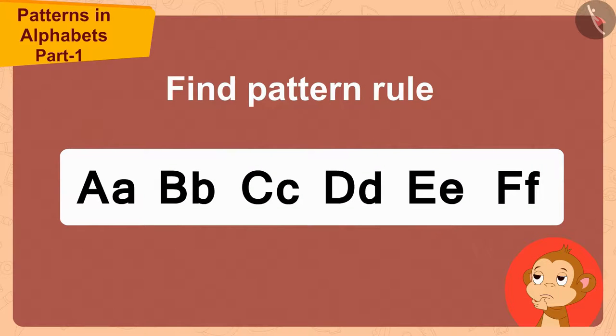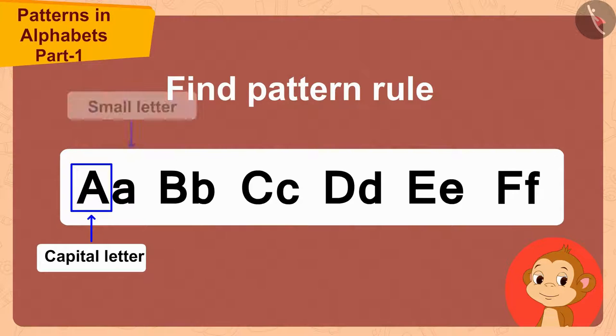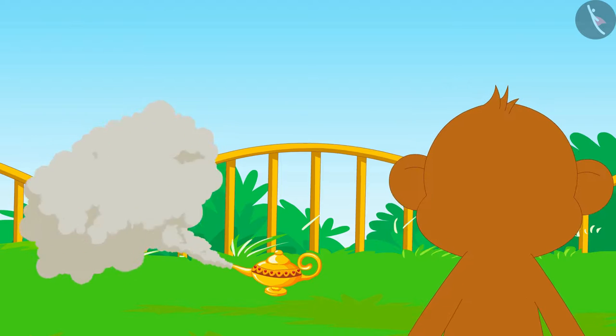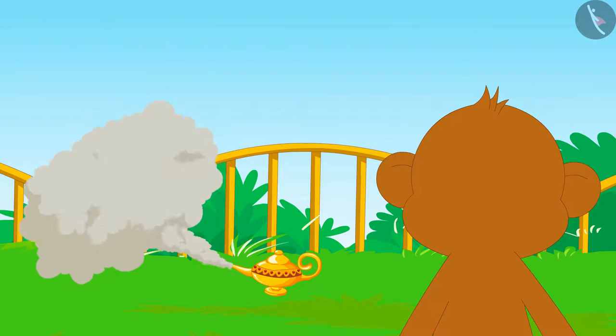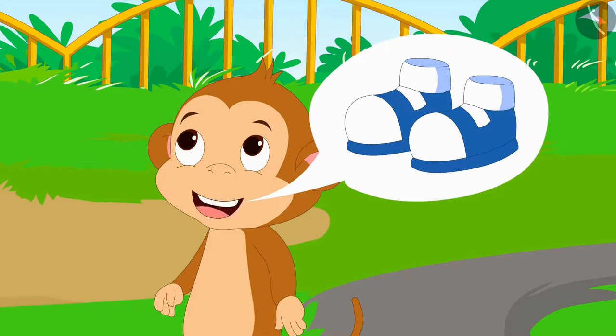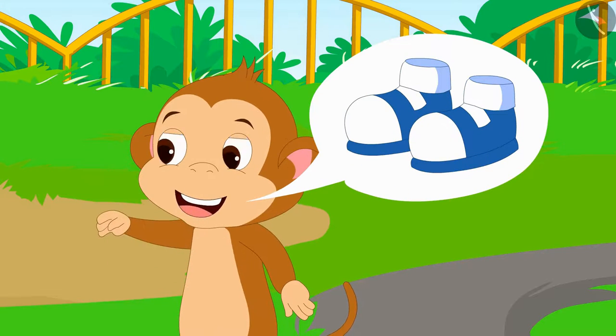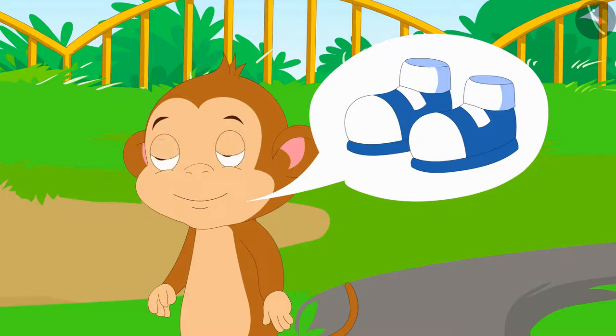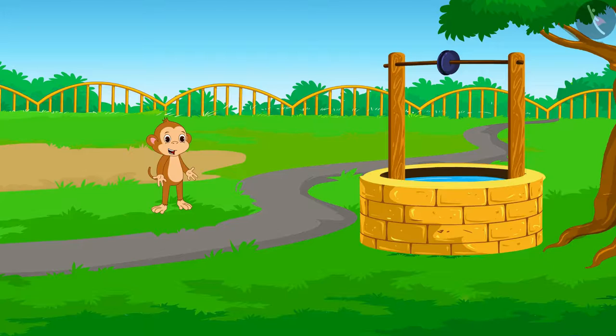Babban also discovered the rule of the pattern made from alphabets like you. What is your next wish? I need new shoes so that I can go for a walk every morning and stay healthy. Just then, new shoes appeared in front of Babban.